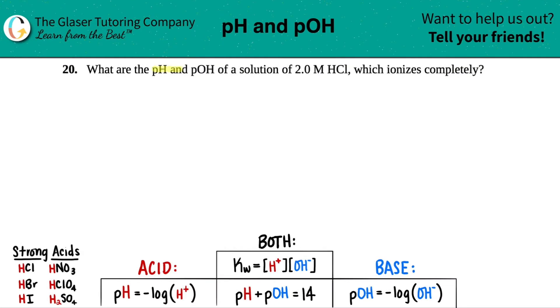Number 20, what are the pH and pOH of a solution of 2.0 molarity HCl, which ionizes completely? Okie dokie. So we just have to find the pH and the pOH of 2.0 molarity HCl.